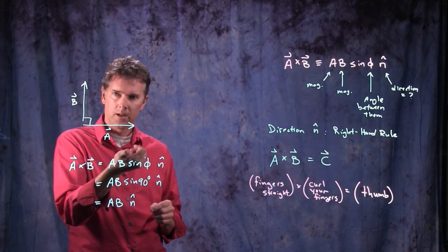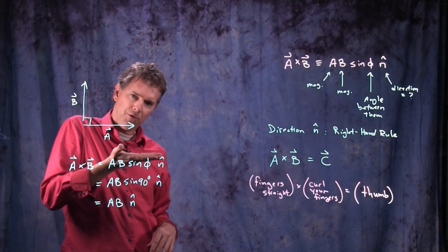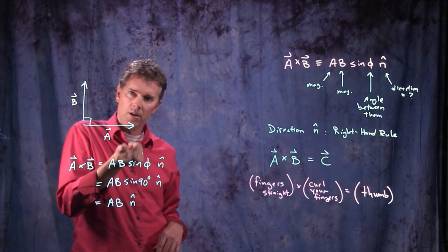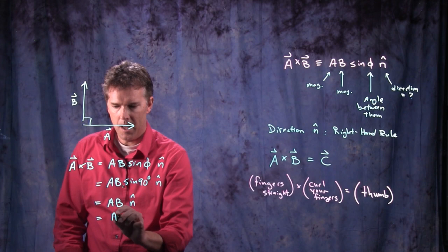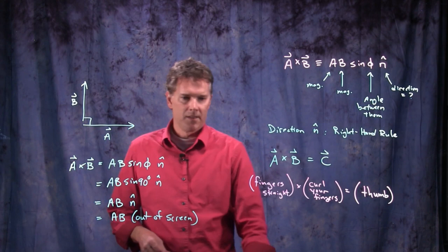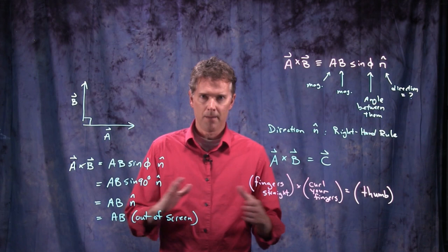Okay, so try this at home, sitting there in front of your computer screen, try it. Put your fingers straight in the direction of A, put your curled fingers up towards the direction of B, and what you should get is a thumb coming out of the computer screen right towards you. Okay, and so this is going to be A, B, and the direction is out of the computer screen. All right, let's take a look at that and make sure it works for everybody at home.